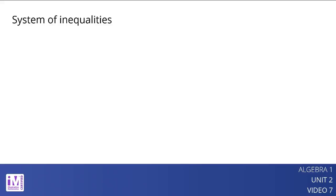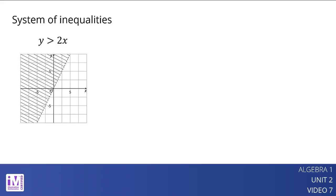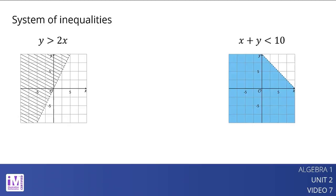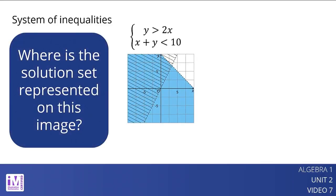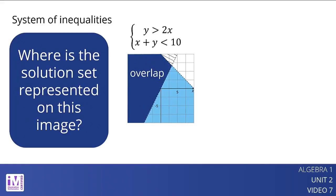Graphing is a great way to show all the possible solutions to an inequality, so let's graph the solution region for each inequality. Here is the graph of y is greater than 2x, and here is the graph of x plus y is less than 10. Because we're looking for a pair of numbers that make both inequalities true at the same time, we graph both inequalities on the same coordinate plane. The region where the two graphs overlap represents the solution set of the system of inequalities.